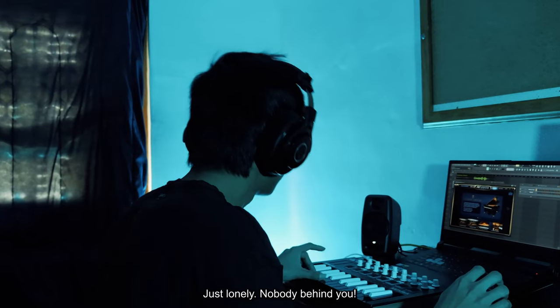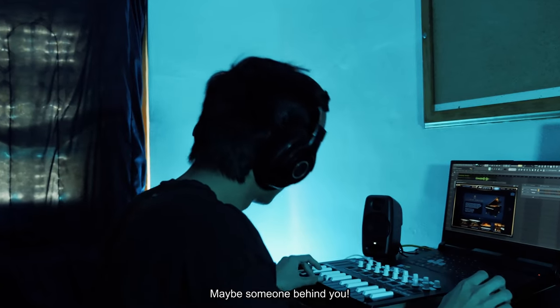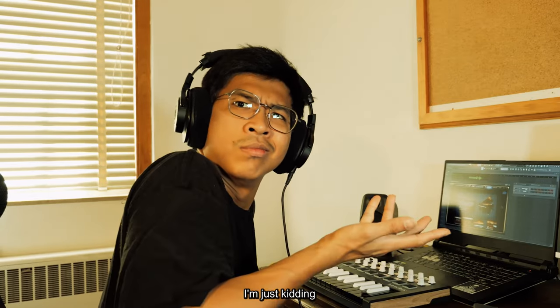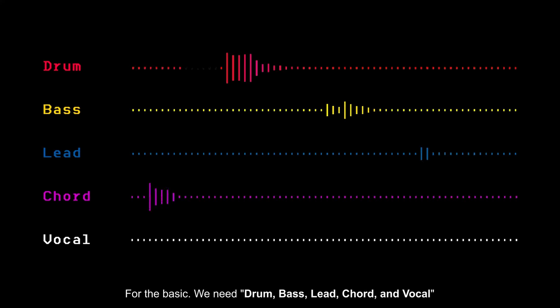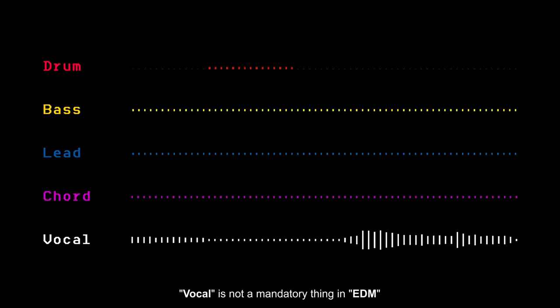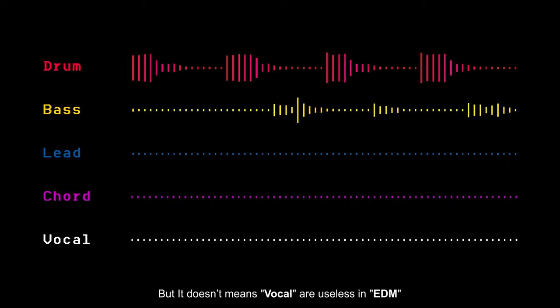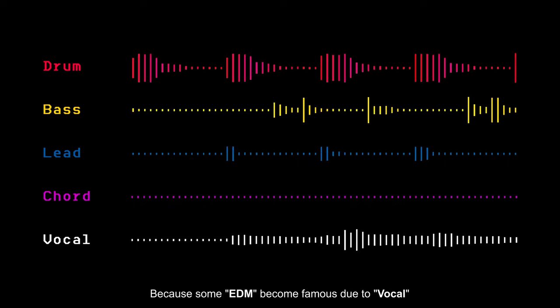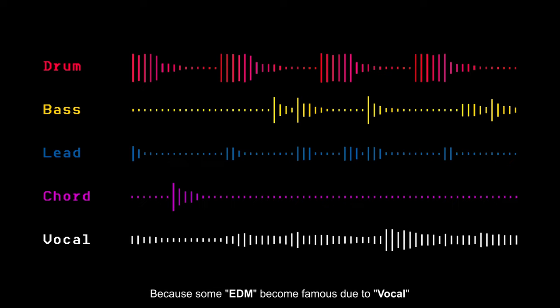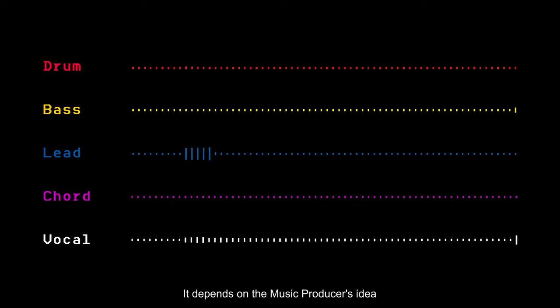Second, just produce it — all day, all night. I'm just kidding. In EDM, there are a lot of music elements. For the basics, we need to learn bass, lead, chords, and vocals. Vocals are not mandatory in EDM because EDM is more focused on instrumental. But it doesn't mean vocals are useless in EDM — some EDM tracks became famous due to their vocals. It depends on the music producer's idea.